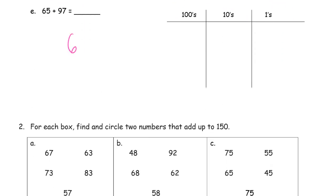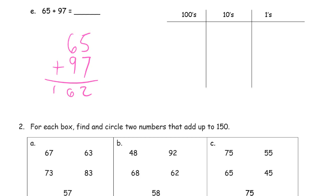Sixty-five plus ninety-seven. This one is easy to do mentally — ninety-seven only needs three more to be a hundred, so it's going to be a hundred sixty-two. But this is about practicing the vertical method, not about solving it quickly in your head, so please take the time to practice. Five plus seven is twelve — a ten and two ones. This one and this nine makes a ten, and six more is sixteen tens — so there's a hundred sixty-two.